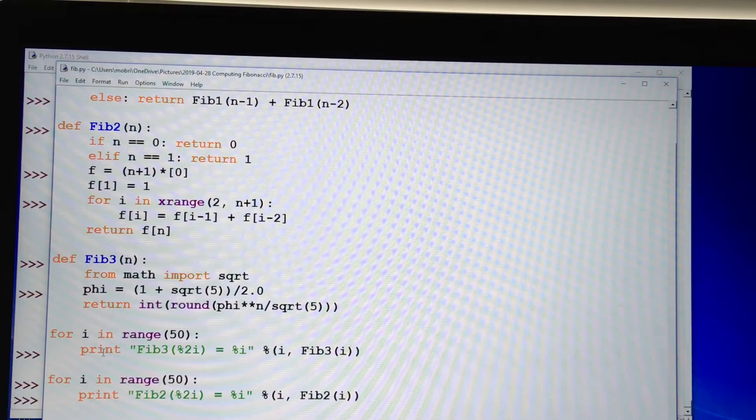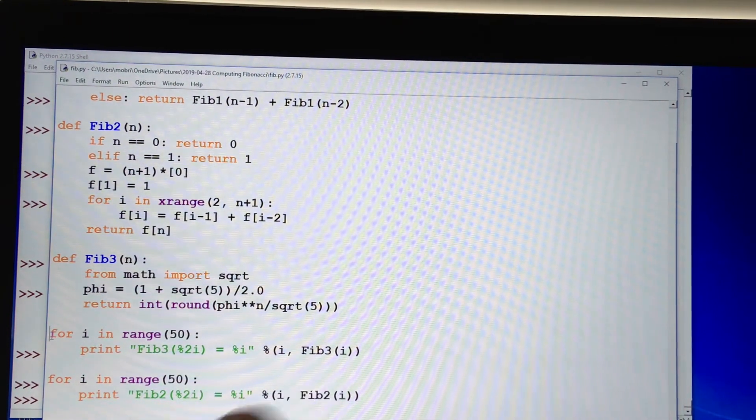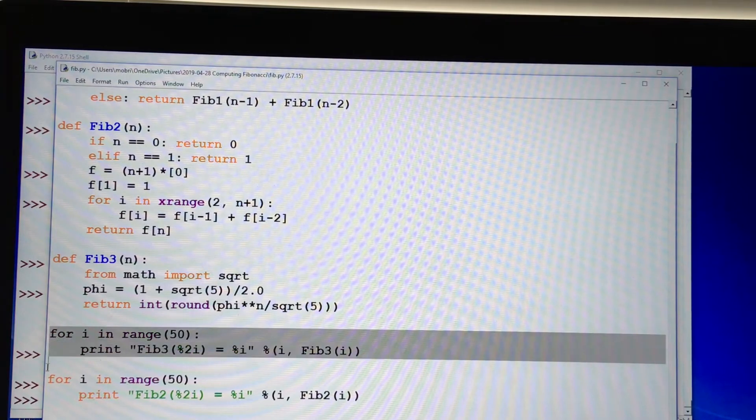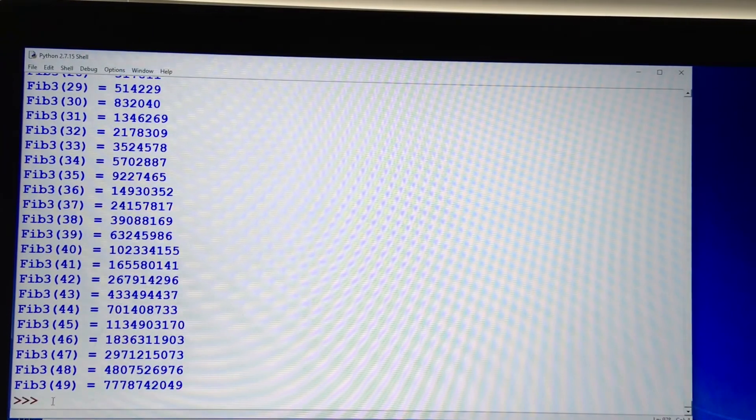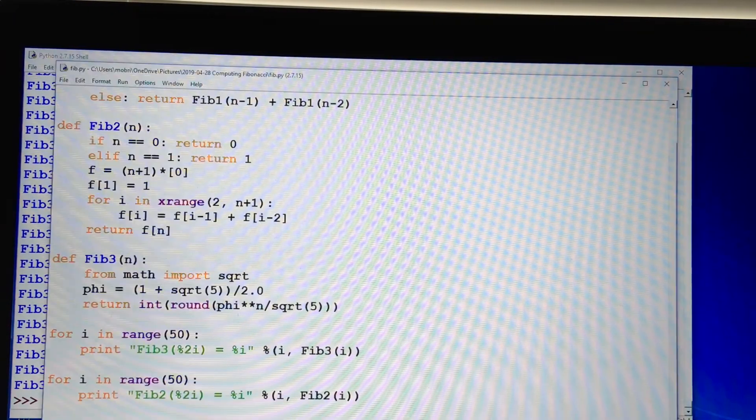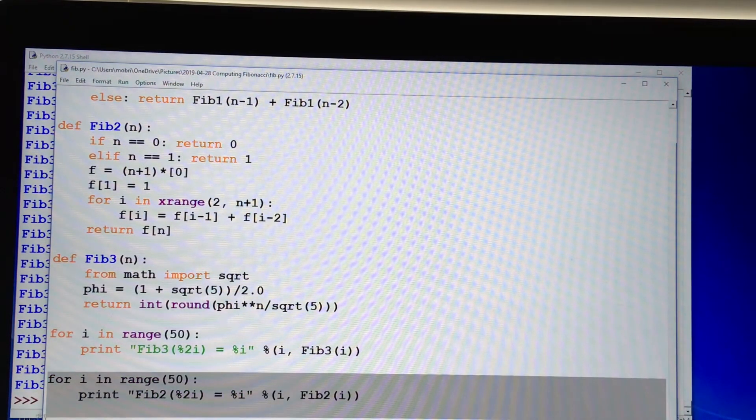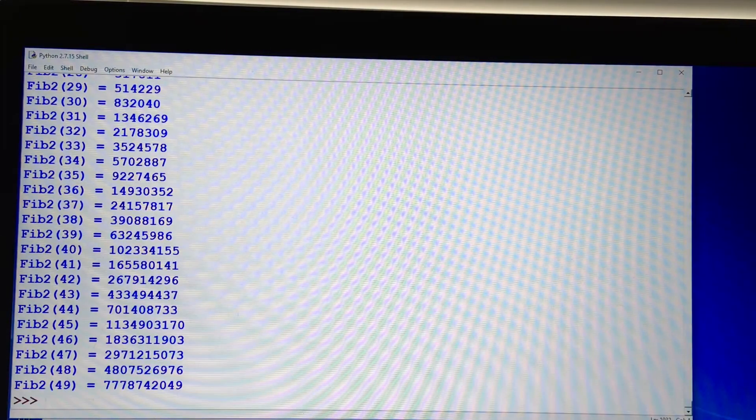I'm going to print out the first 50 terms. Here we're testing fib3, the thing where we have an explicit formula for the nth term. Copy, paste, and it runs pretty fast. Get these large numbers. Now let's try fib2. Copy, paste, runs pretty fast.